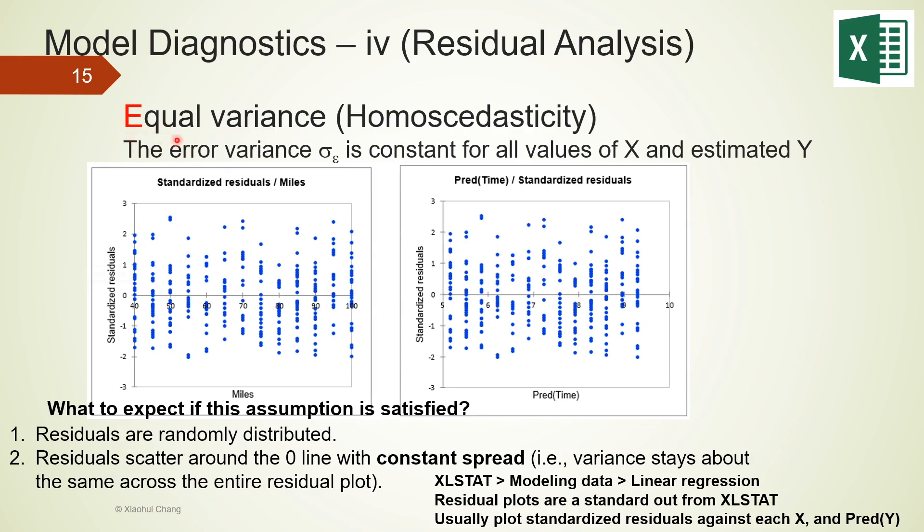The last assumption is equal variance, also known as homoscedasticity. We will assume the errors to be constant. We will assume the error variance to be constant for all values of x and estimated y. What to expect if this assumption is satisfied? Residuals should scatter around the zero line with constant spread. So the variance should stay about the same across the entire residual plots, regardless of whether the horizontal axis is x miles or estimated y predicted time.